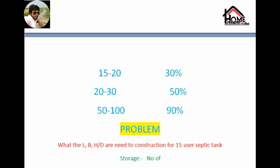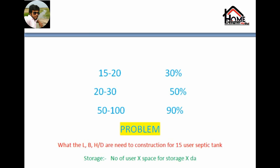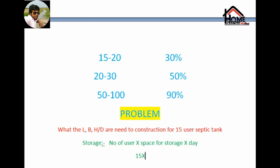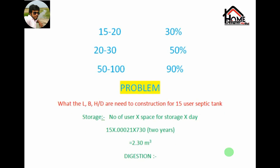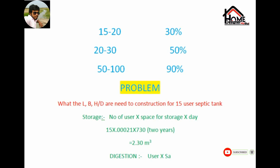Pehle to space of storage ko nikalna padega. Space of storage = number of users × space of storage rate × days. So 15 users × 0.0021 × space of 3 days equals 2.30 meter cube.